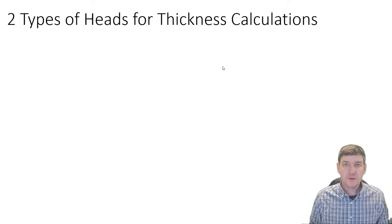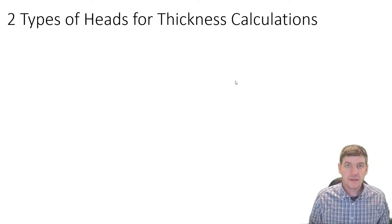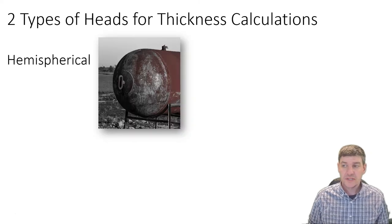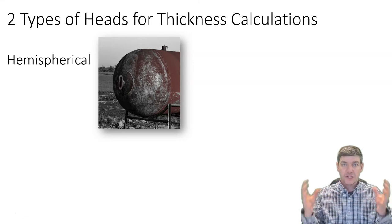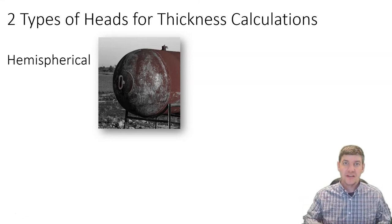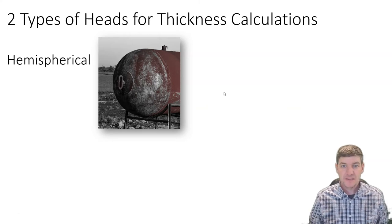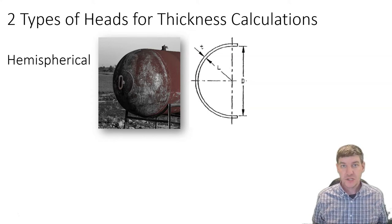First, we have two different types of heads that we need to be able to calculate. The first one is a hemispherical head, and it is a very round shape - a perfect sphere other than it's only half. A hemisphere is half of a sphere, a very round shape.